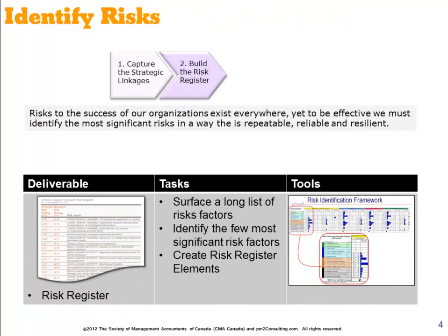The second step is building the risk register. Through a risk identification framework, we'll help you surface risks if you don't have an existing risk register, or even validate those you have if you do have a risk register. The output of this phase will be a traditional risk register which includes a list of your key strategic risks.